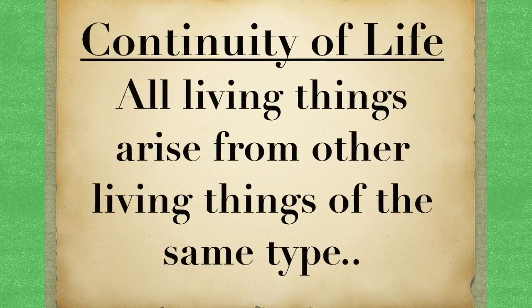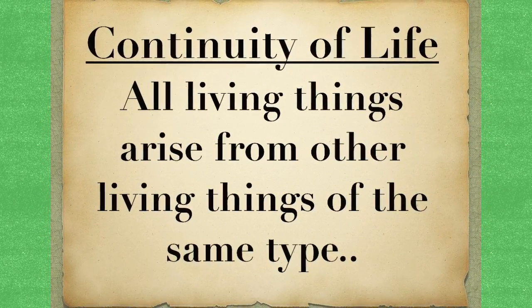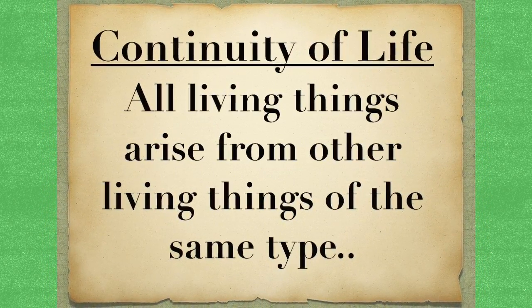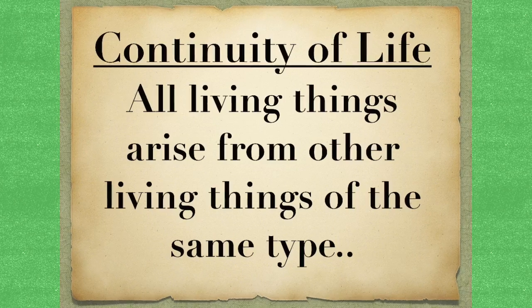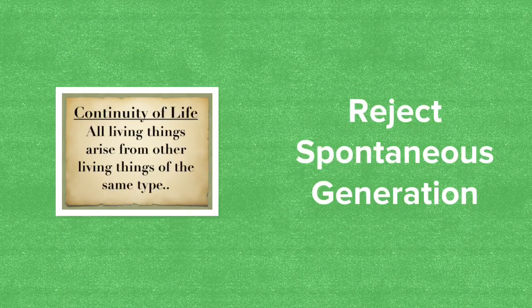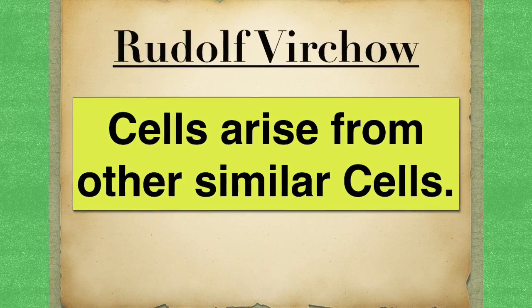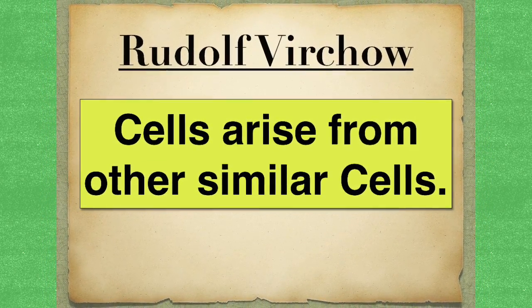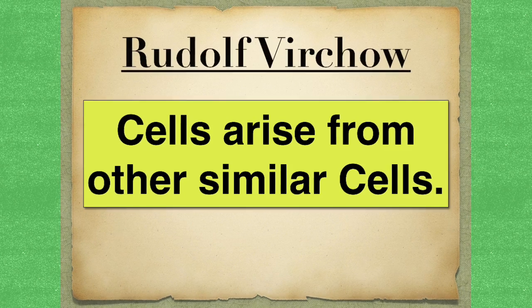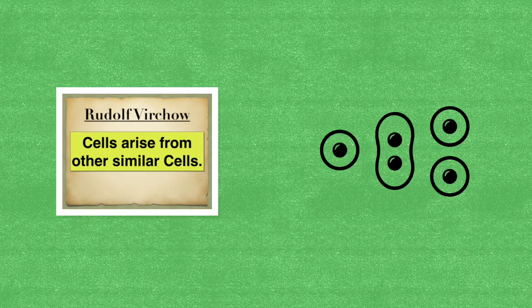Another definition we encounter is continuity of life. This means that all living things arise from other living things of the same type — living things don't just come out of thin air. A famous scientist, Rudolf Virchow, coined the phrase that cells arise from other similar cells. Mitosis — that form of nuclear division — and cytokinesis proves this, and you'll learn about this at a later stage.